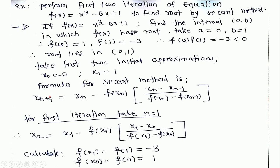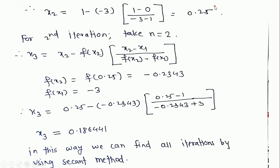Applying the secant formula: xn plus 1 equals xn minus f of xn times xn minus xn minus 1, divided by f of xn minus f of xn minus 1. For the first iteration, take n equal to 1. Note that in Newton-Raphson method we take n equal to 0 because it has only one initial guess, but here we have two guesses x0 and x1. We calculate x2 equals x1 minus f of x1 times x1 minus x0, divided by f of x1 minus f of x0. The values of f of x1 and f of x0 are minus 3 and 1, giving x2 equal to 0.25.